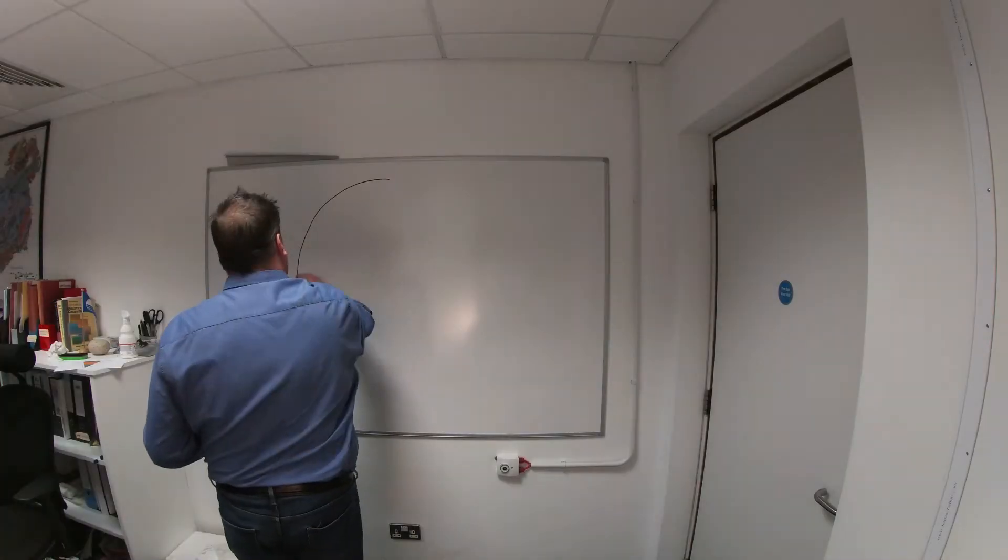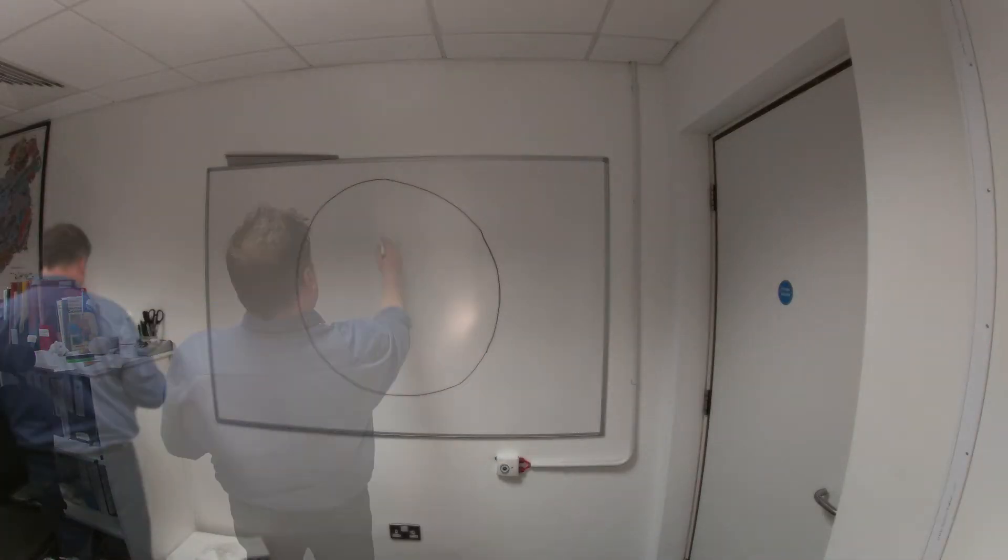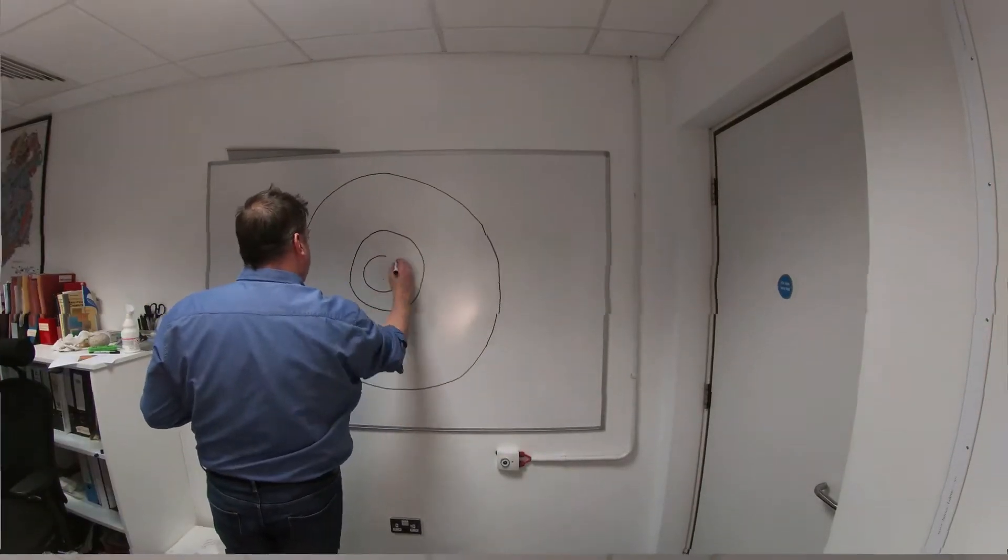If you ask most people to draw a picture of what the inside of the Earth looks like, here's what they'll draw. First of all, they'll attempt to draw a nice round shape - not as easy as it looks.